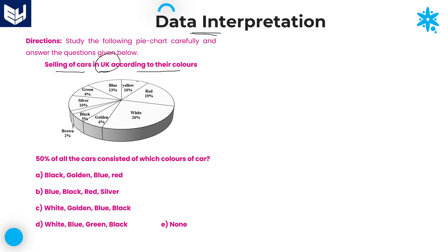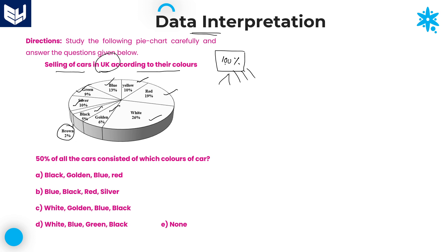Here we have different colors in this pie chart. The entire pie chart is about 100%, and this 100% is divided into several colors. Yellow is 10%, red is 19%, white is 26%, golden 6%, black 5%, brown 2%, silver 10%, green 9%, and blue 13%. If you add all these values, you will get 100%.